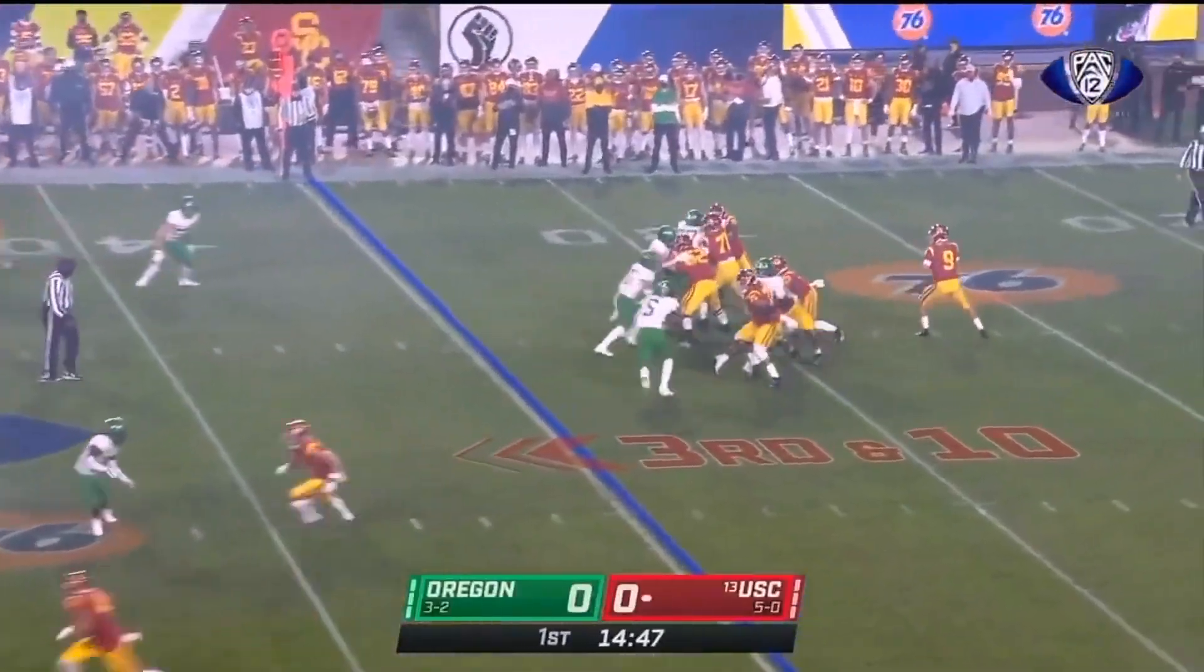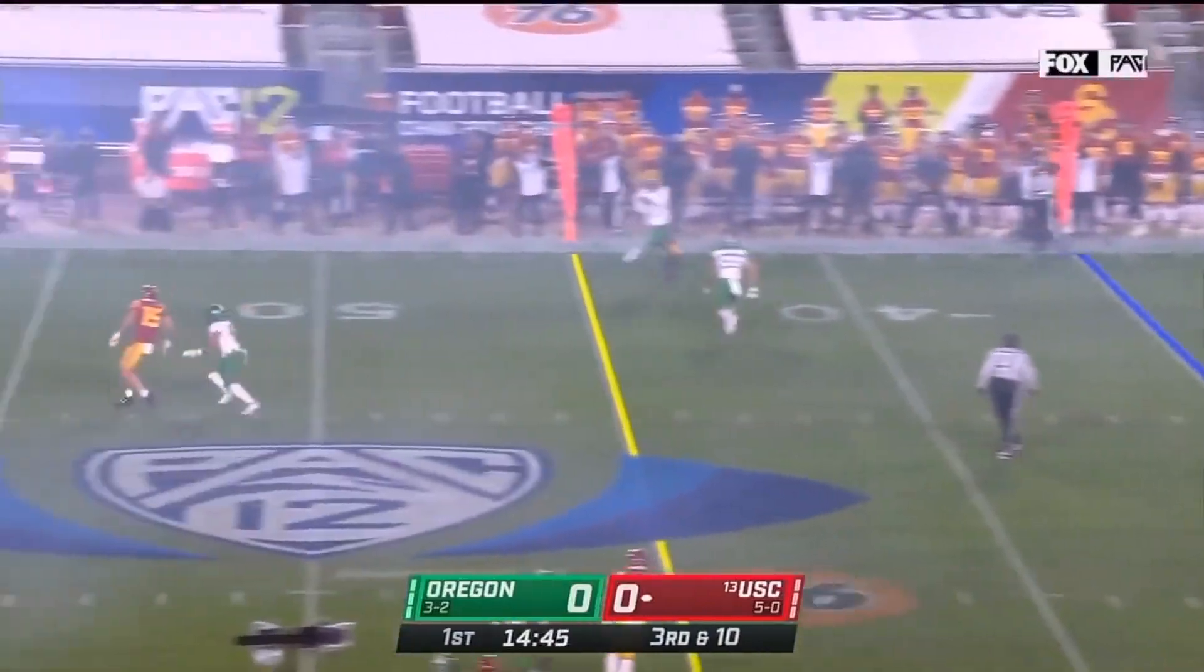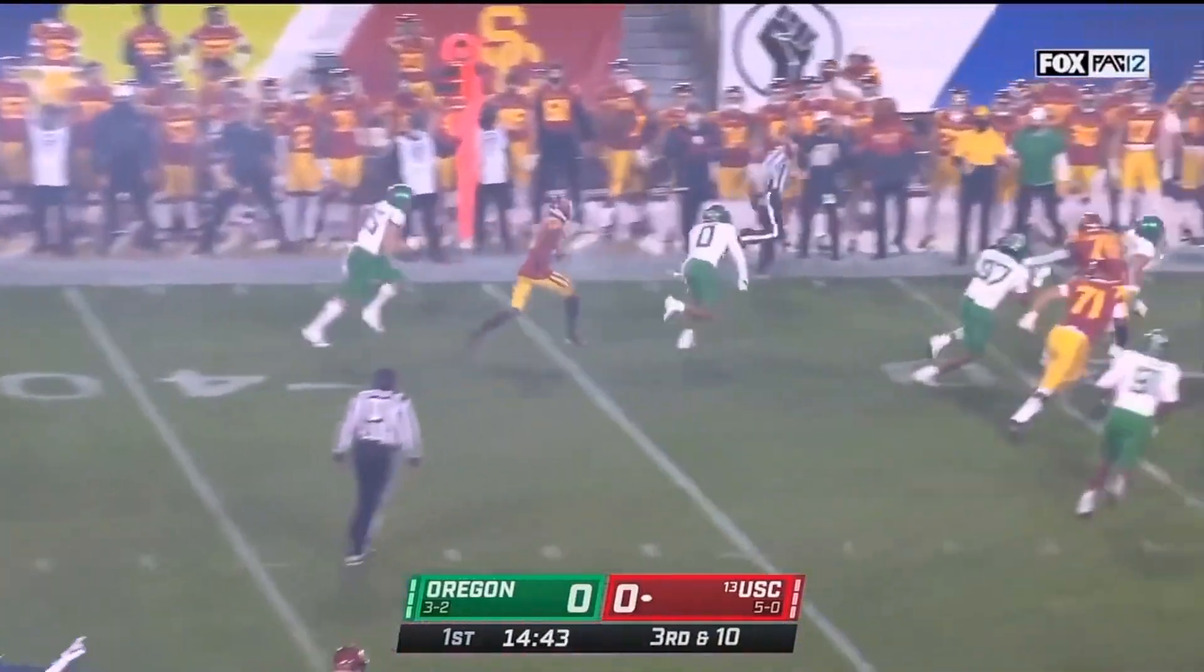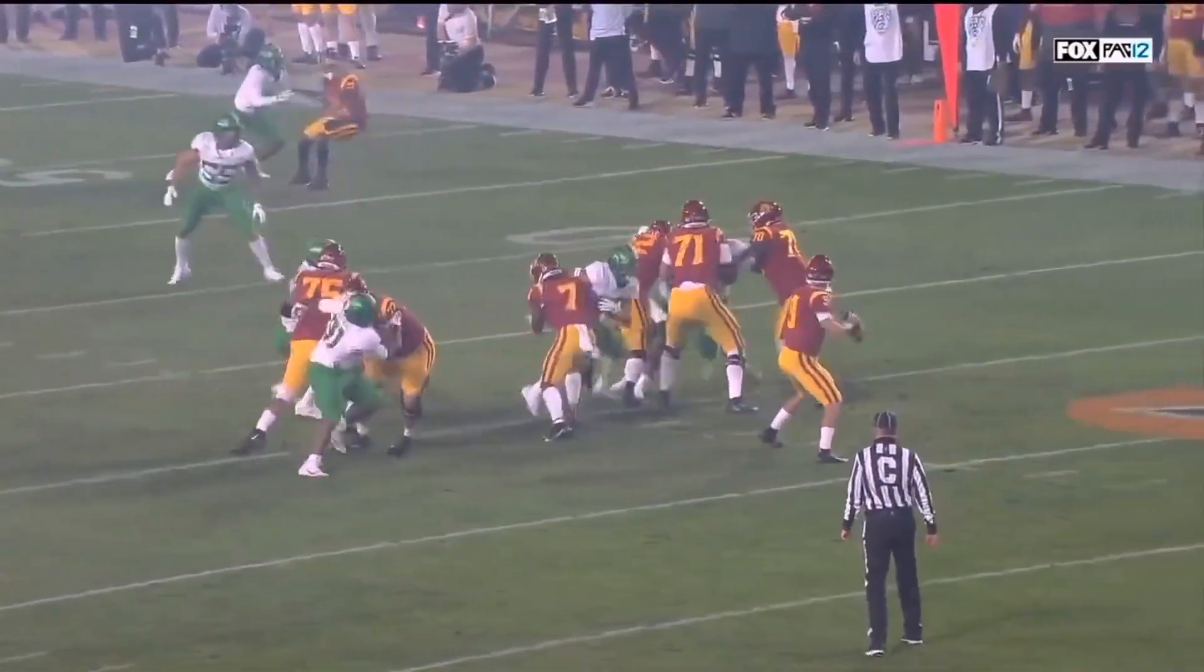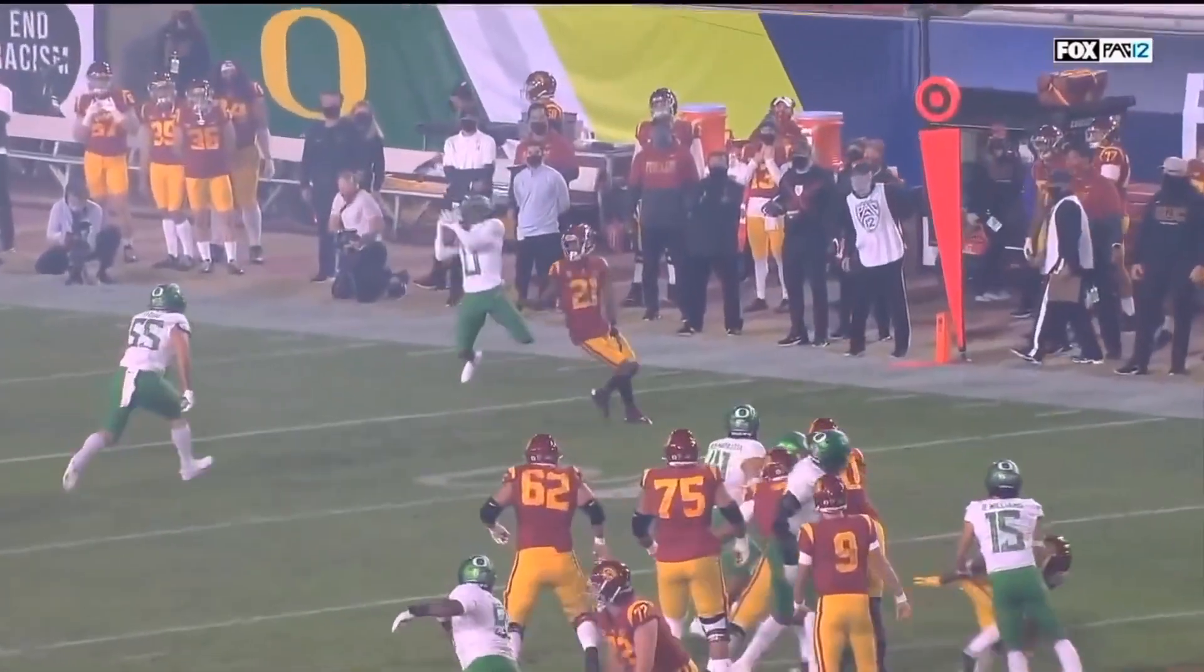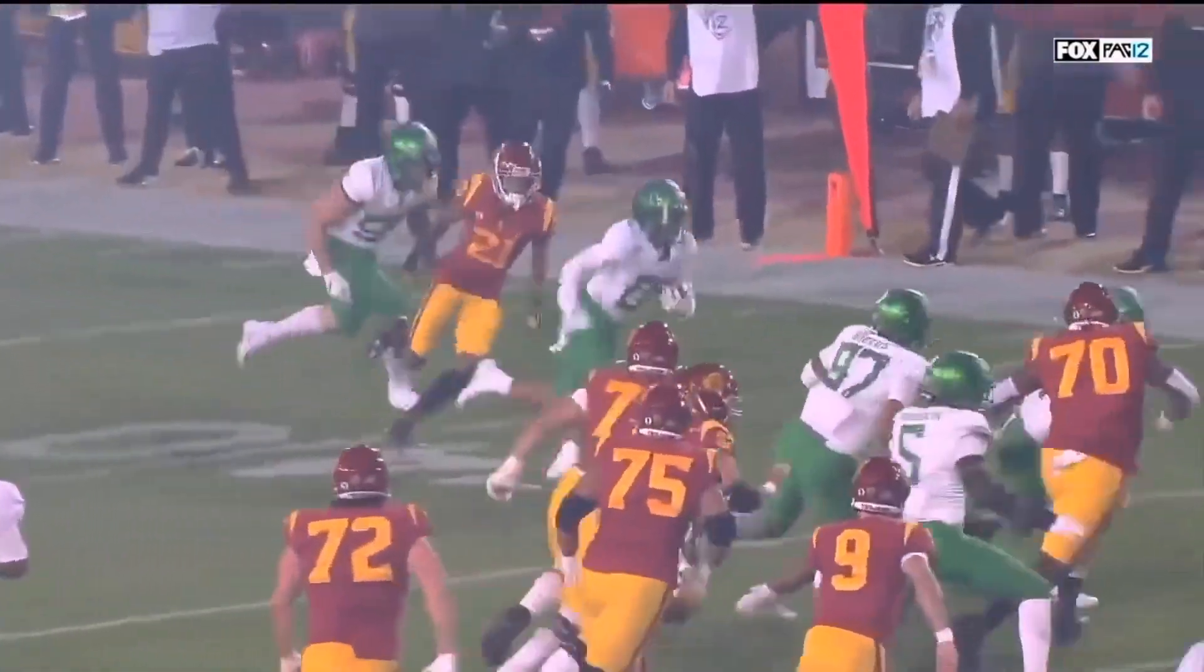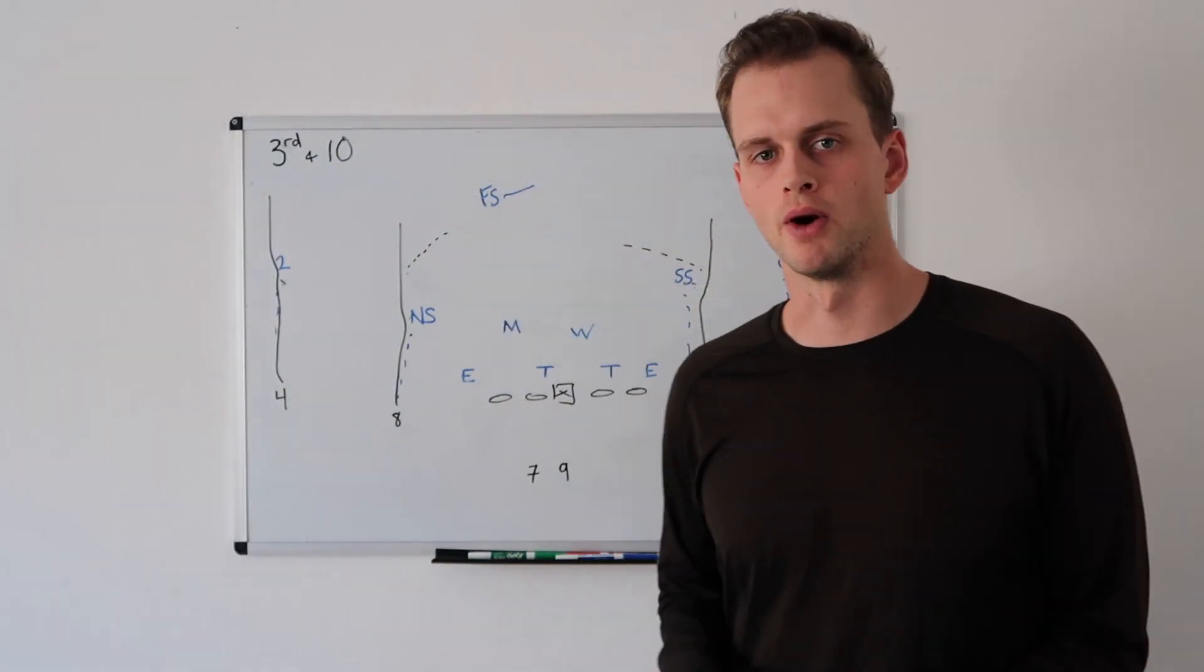Keaton Slovis throws his first of three interceptions on the day. From the 35 on early 3rd-and-10, Slovis steps into one and it is intercepted! The Avedor Lenore jumps the ball. You'll see him at the top of your screen on the right. Sits on it, triggers. Just a flat miss. That's late. All right, so what happened here? What went wrong?